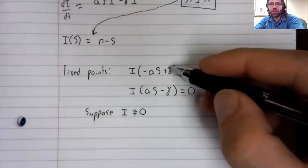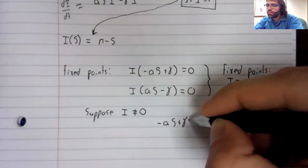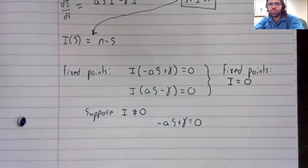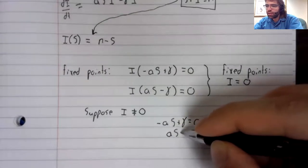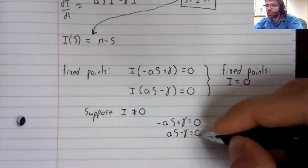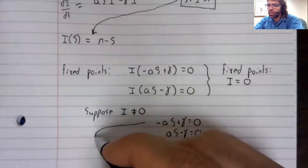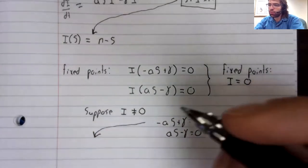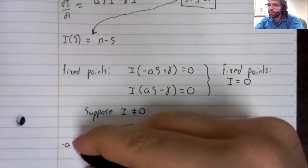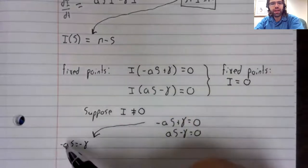Then for both of these equalities to be true, negative AS plus gamma equals zero and AS minus gamma equals zero. And if you solve that first equality, take gamma to the right, negative AS equals negative gamma, divide both sides by negative A.